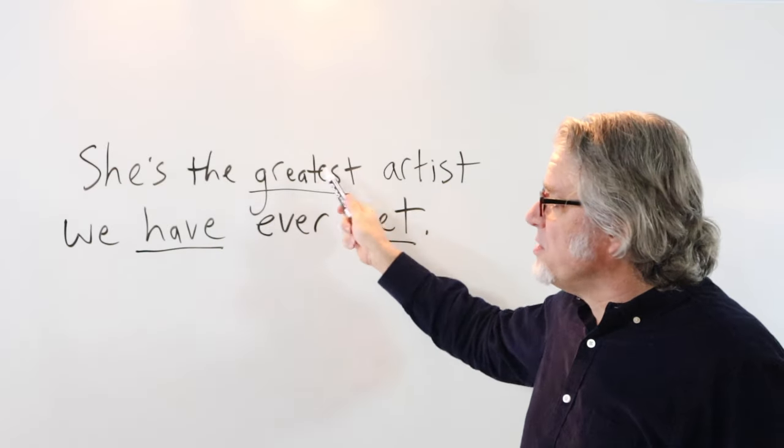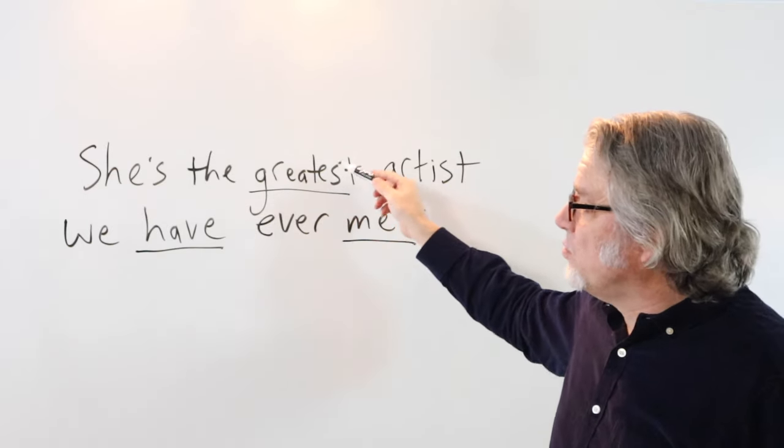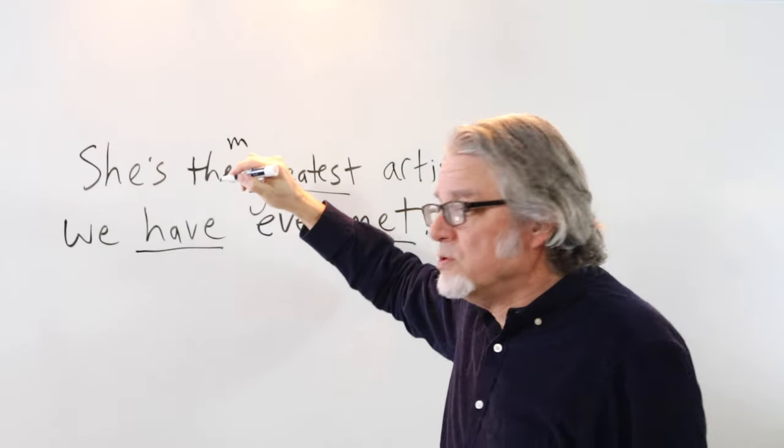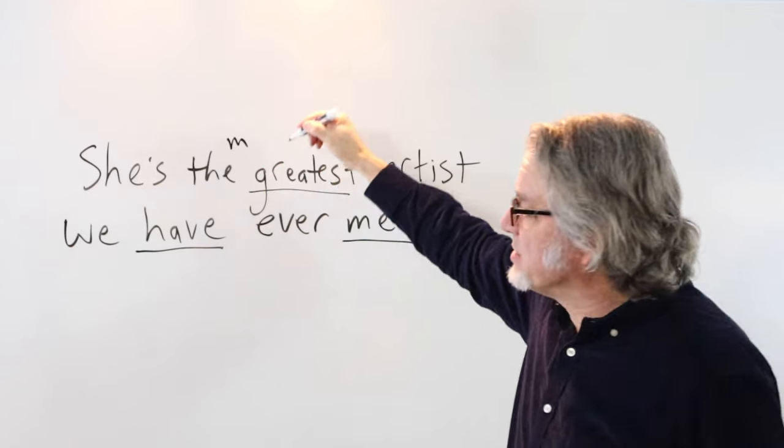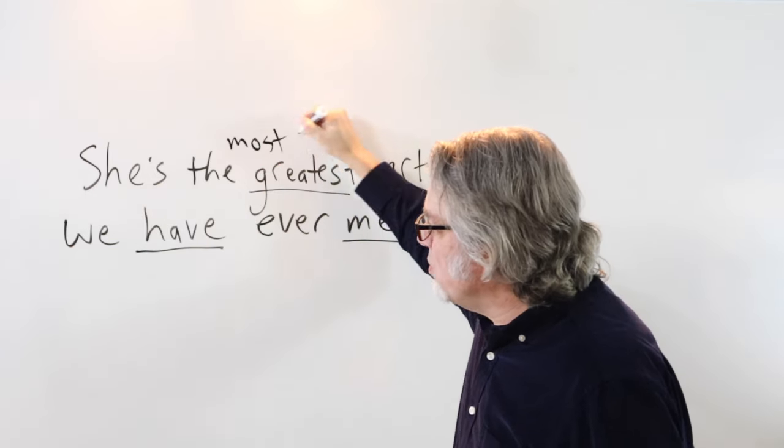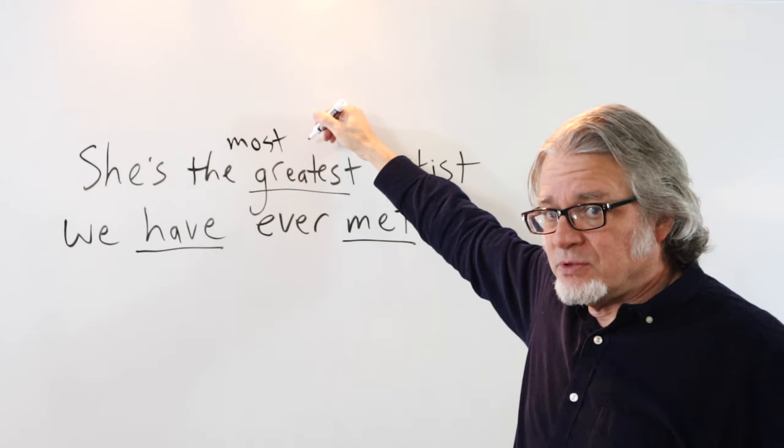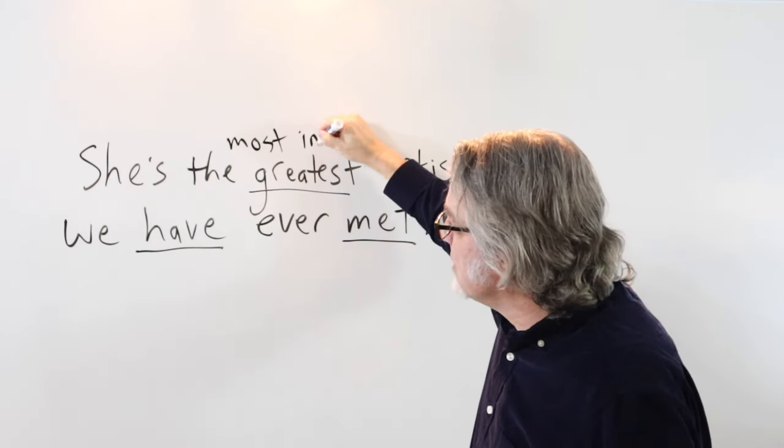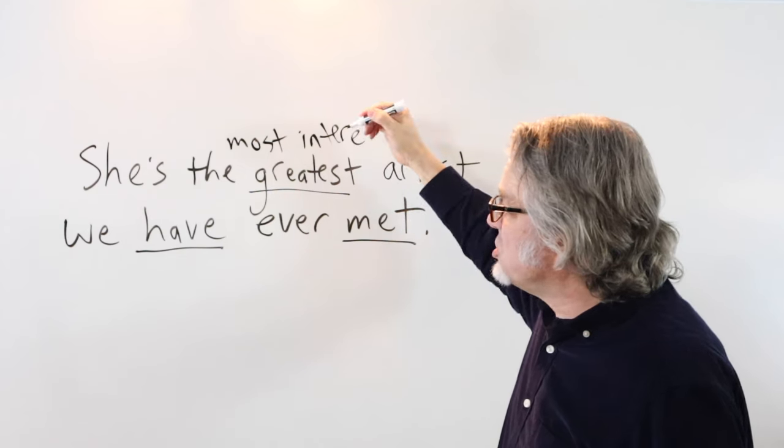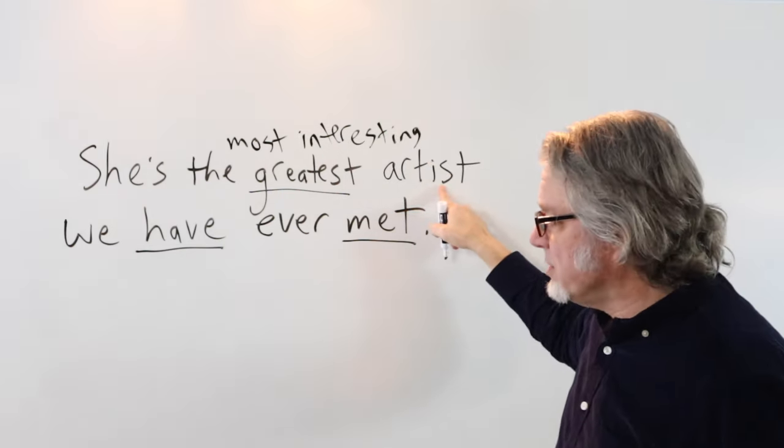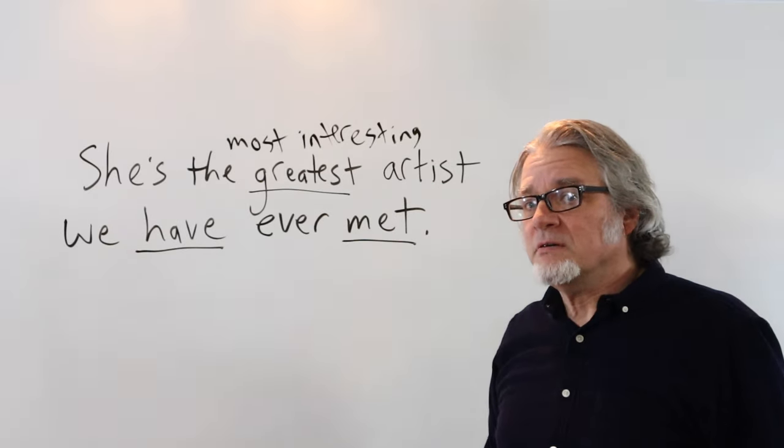You could replace this adjective with other adjectives. If we use the word interesting as an adjective, then put most in front of interesting. Because interesting has two or more syllables, so she's the most interesting artist we have ever met.